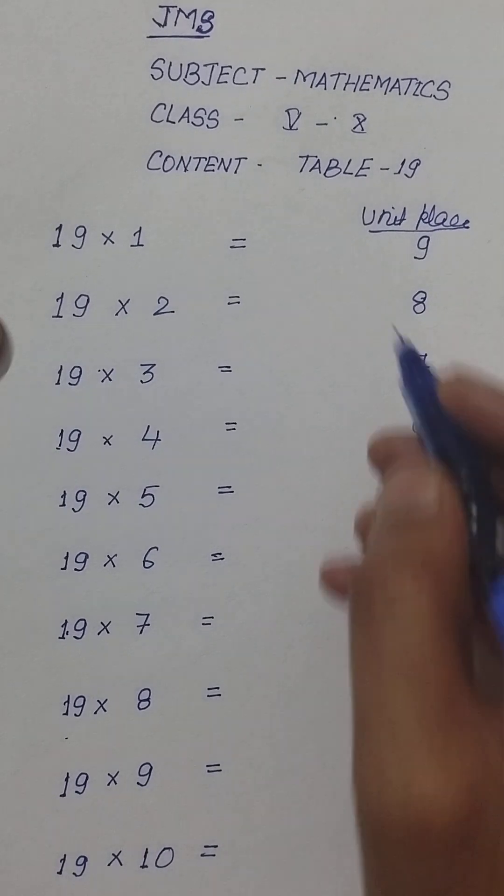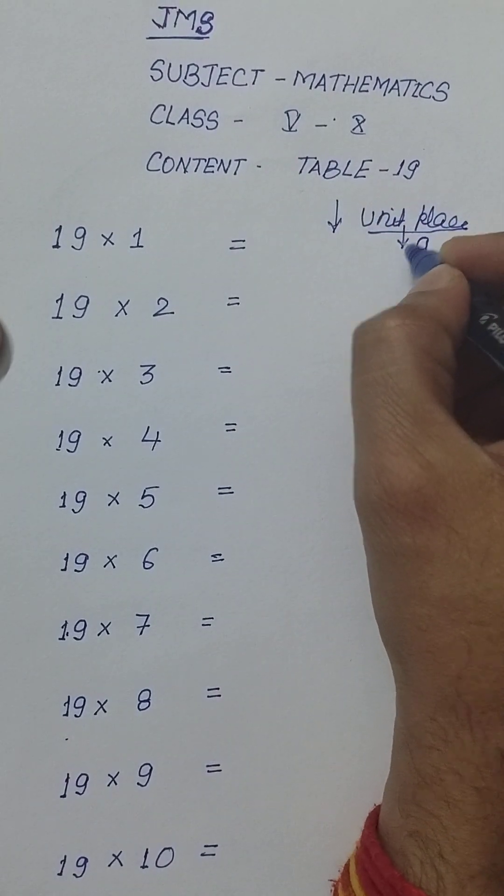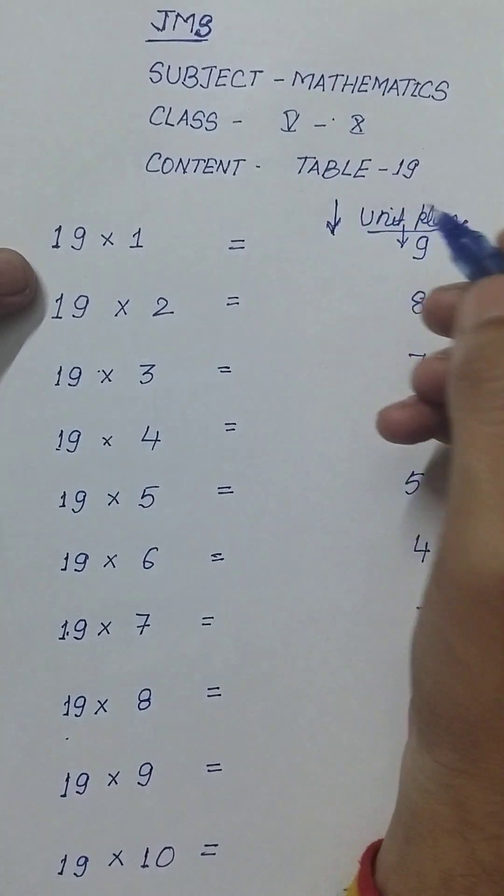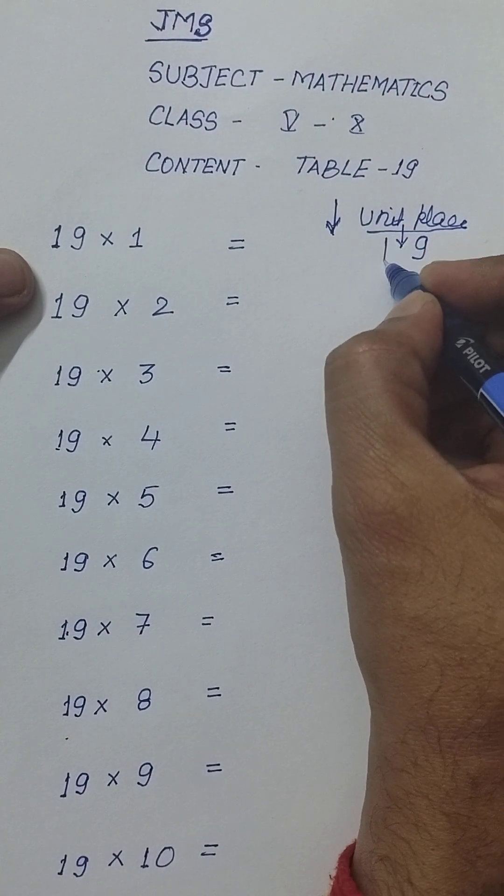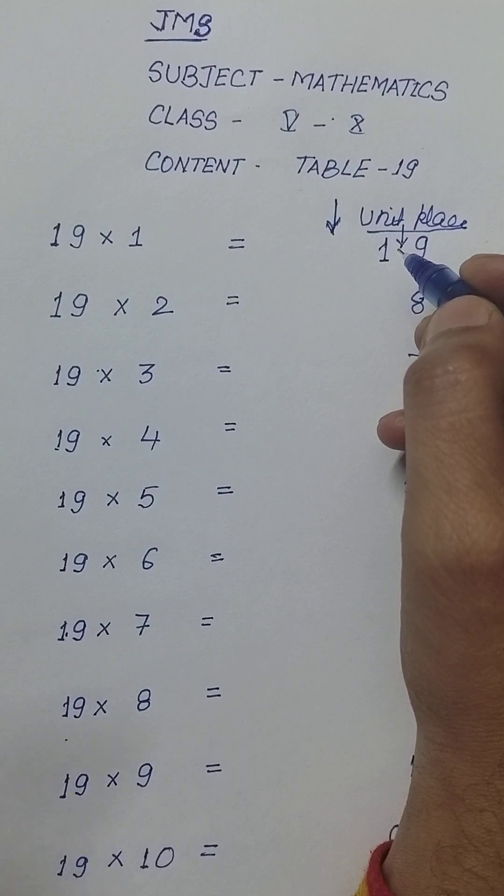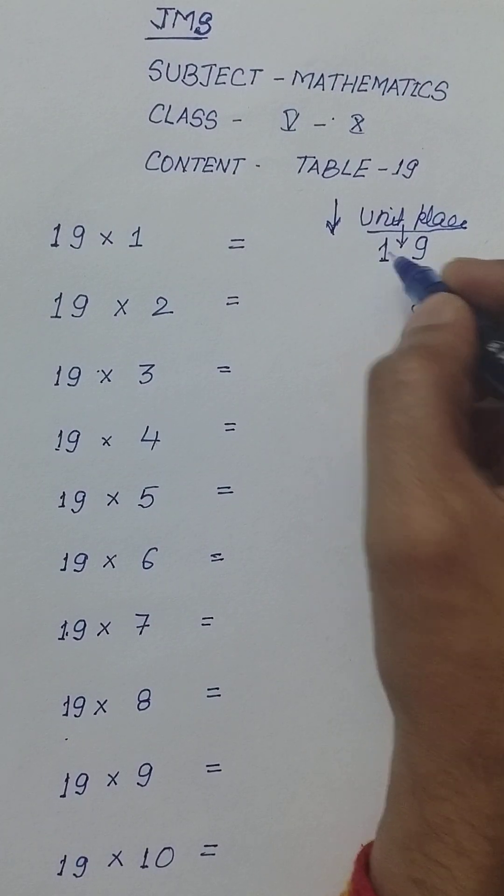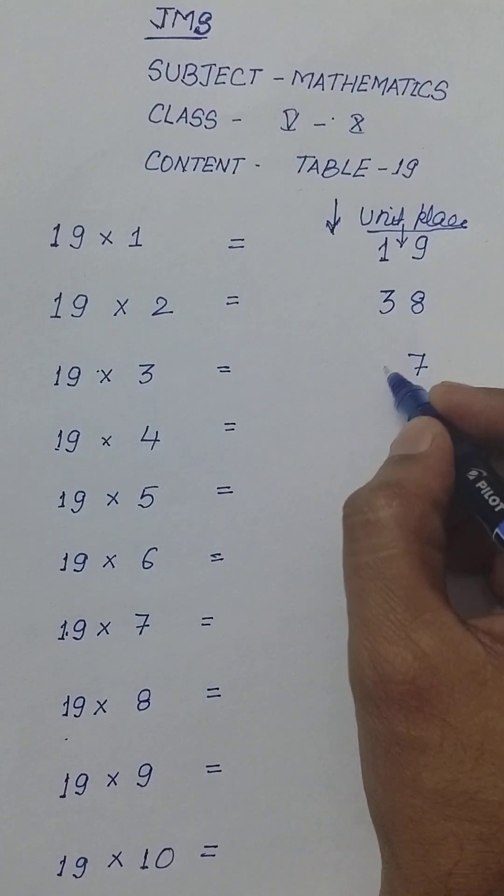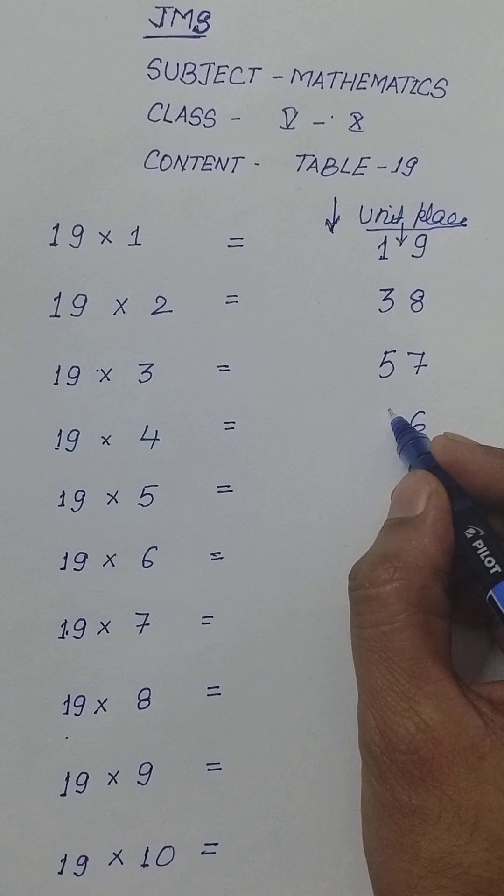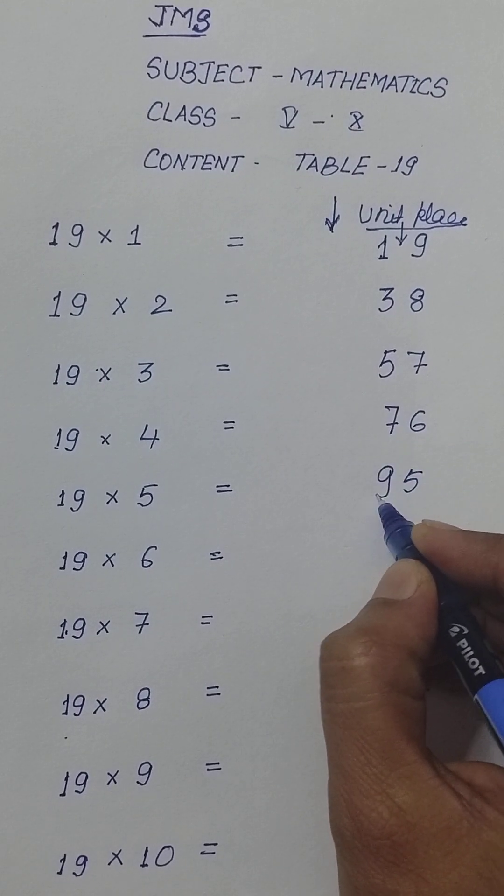Now, what to write at tens place? This is unit place, this is tens place. So at tens place, what you are supposed to do? You start with 1 and keep adding 2 or write the next odd number. So this is 1, then you write 3, then you write next odd number is 5, next odd number is 7, next odd number is 9.